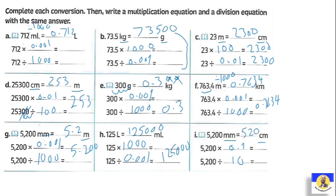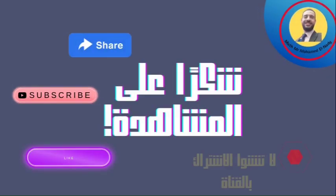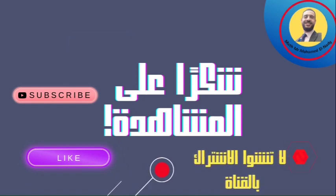كده كونا حبيبي خلصنا اللسن النهاردة. اللي هو فهمنا الريليشن ما بين الـ multiply والـ divide: لو حبيت عمل multiply by 100، فيبقى هي هي المقابل لها divided by 0.01 وهكذا. ده مهم جداً. رجعنا كمان مع بعض: الكيلوغرام فيه 1000 gram، اللتر فيه 1000 millilitre، الكيلومتر فيه 1000 metre، المتر فيه 100 centimetre، والسنتي فيه 10 milli. Thanks a lot for your watching. See you inshallah in the new video. السلام عليكم ورحمة الله وبركاته.